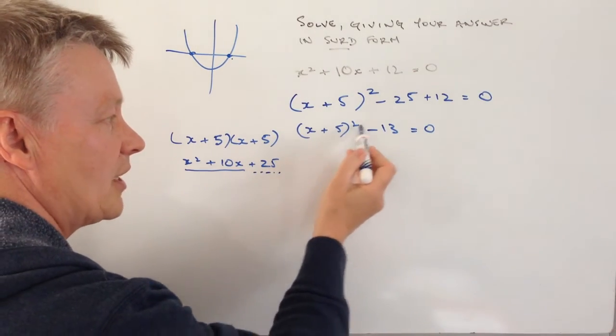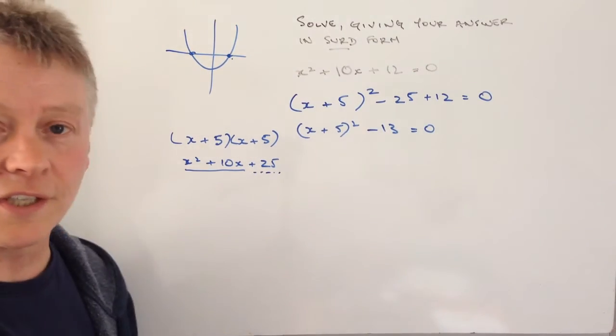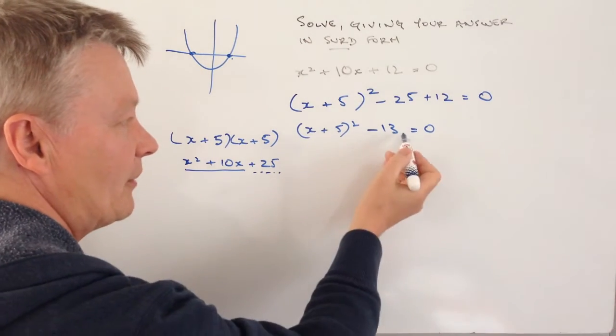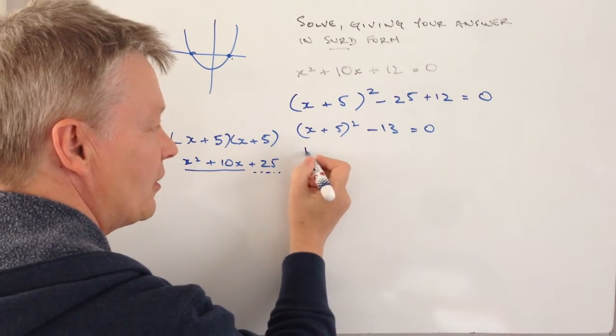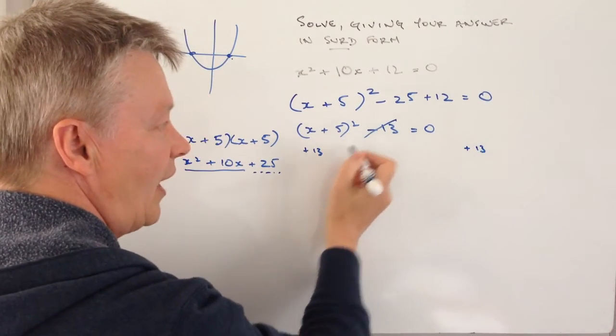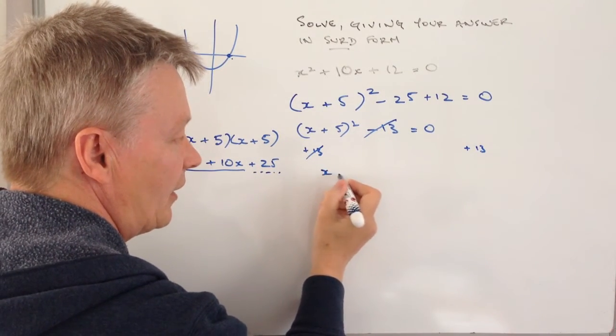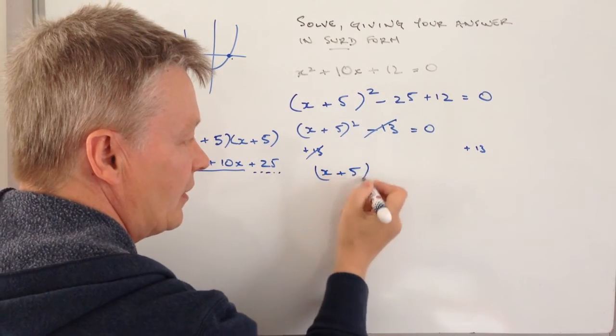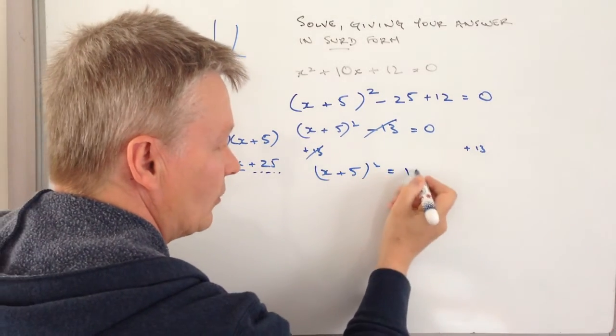I've got x plus 5 squared minus 13 equals 0. Not happy about that minus 13. I'm going to add 13 to both sides. That cancels out and I get x plus 5 squared equals 13.